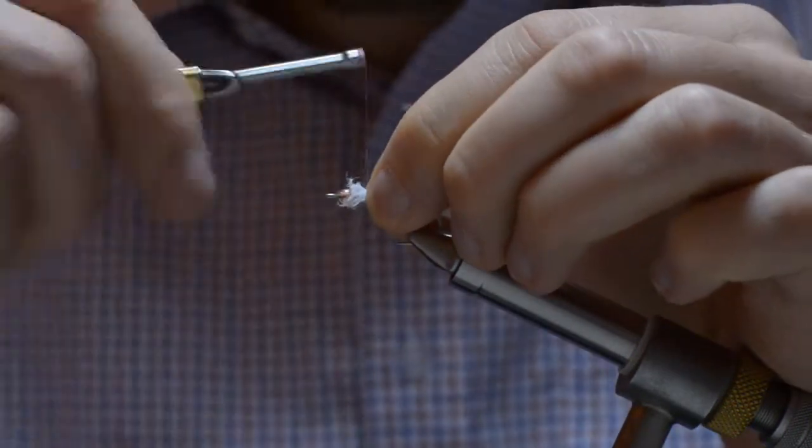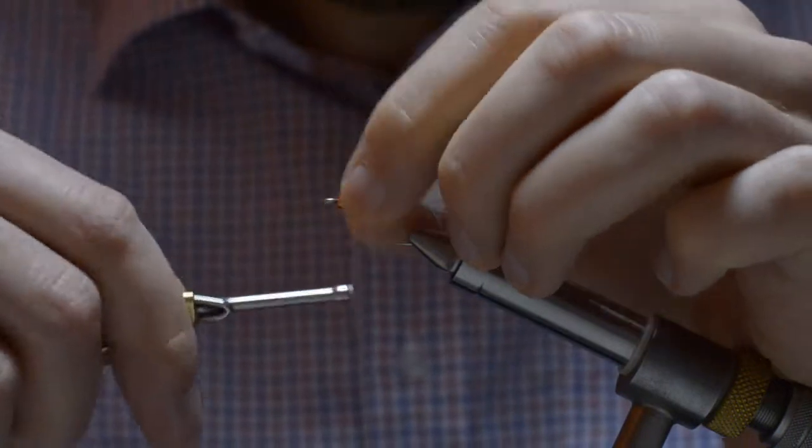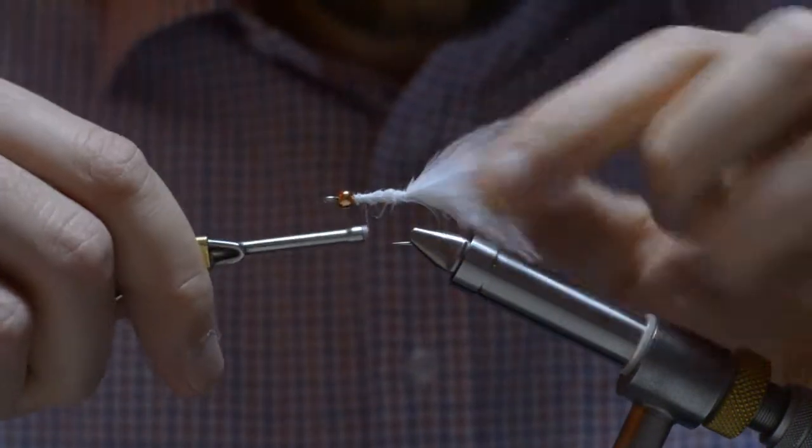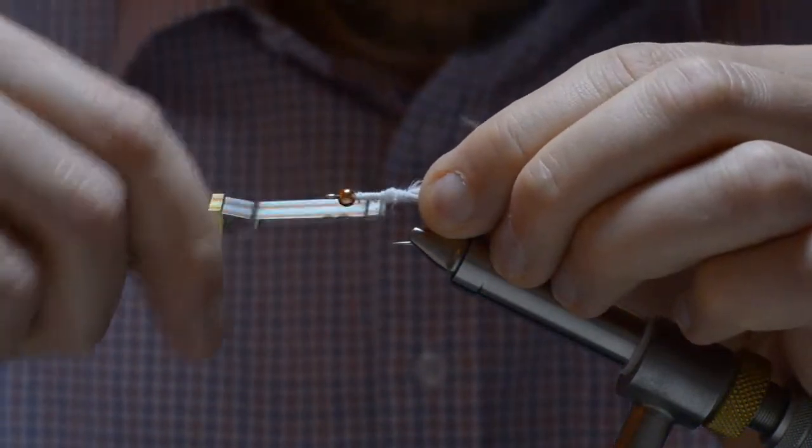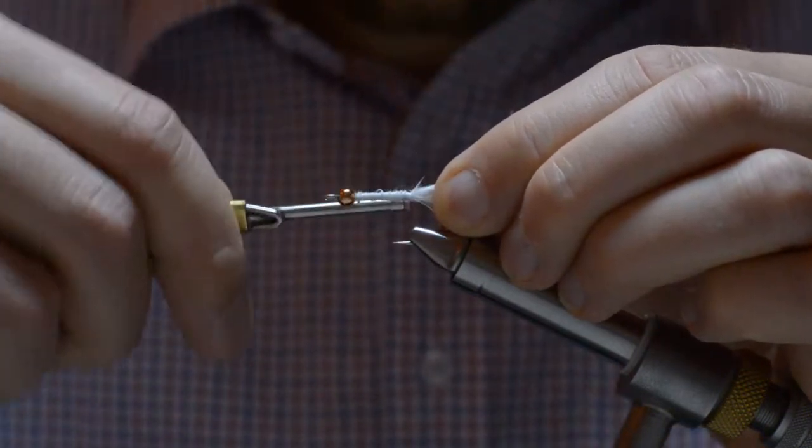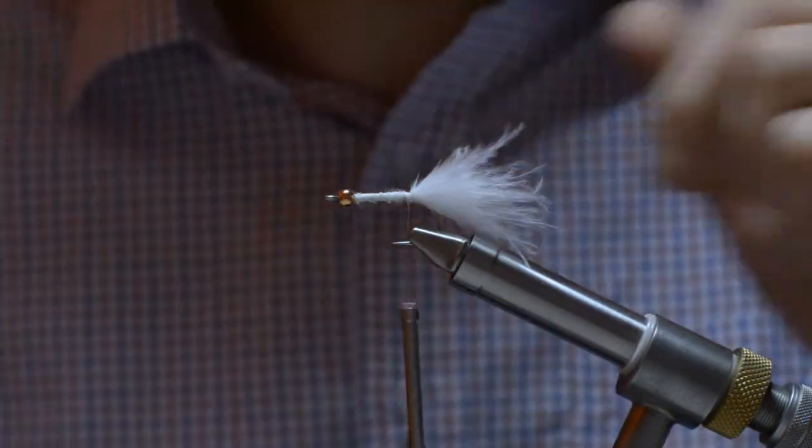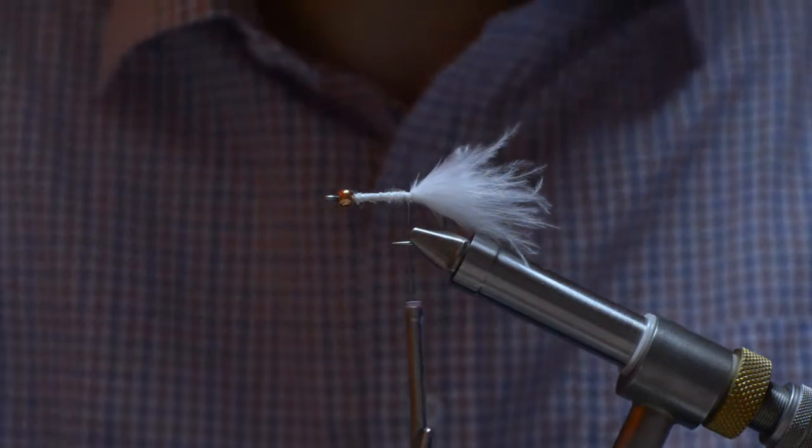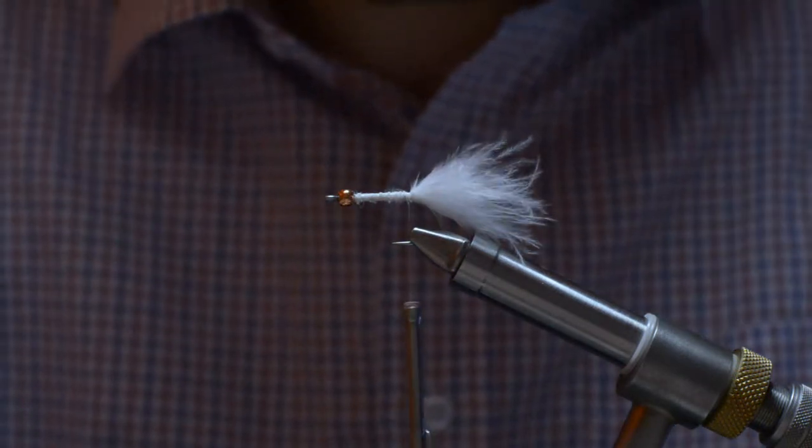The most important thing about the tail is that it's nice and soft, really nice and fluffy. And that you tighten all the way, the length of the hook shank, so you get a nice and even body.